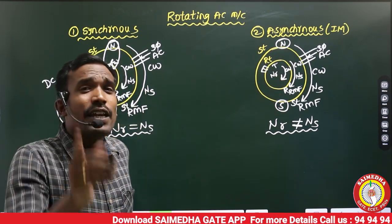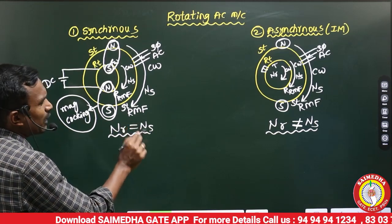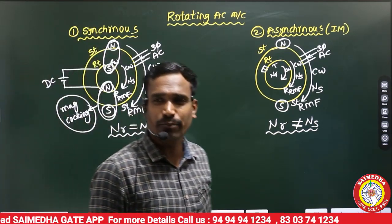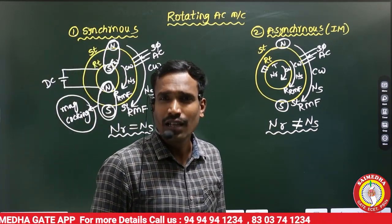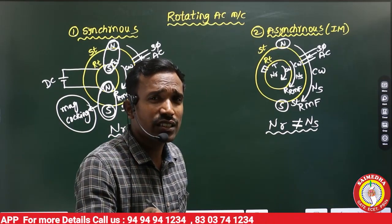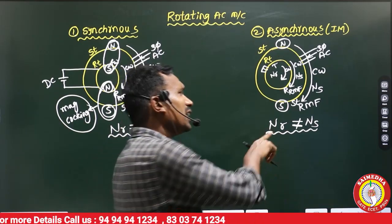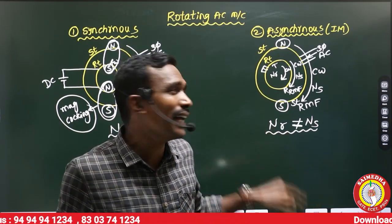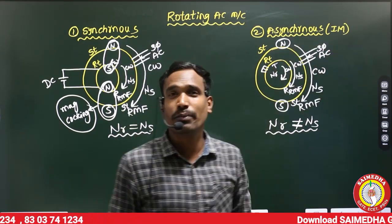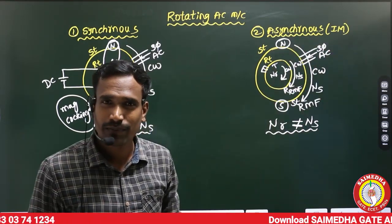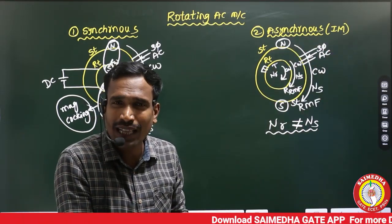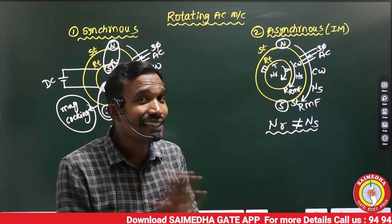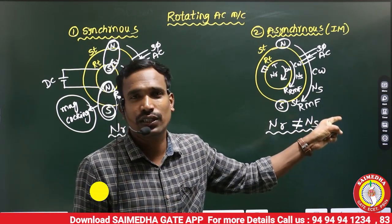The machine in which the rotor speed equals synchronous speed is called a synchronous machine. The machine in which the rotor speed is not exactly equal to synchronous speed is called an induction machine. If it is exactly equal — synchronous. If it is exactly not equal — induction machine. This is the main difference between these two.